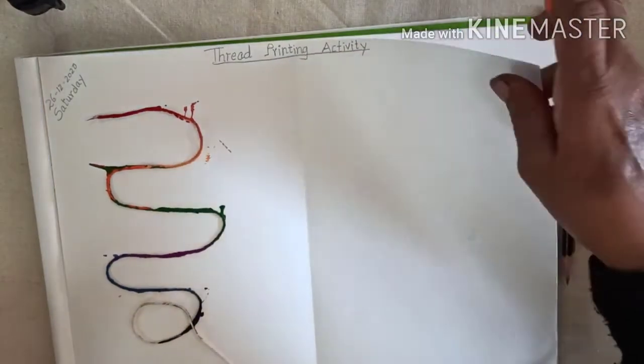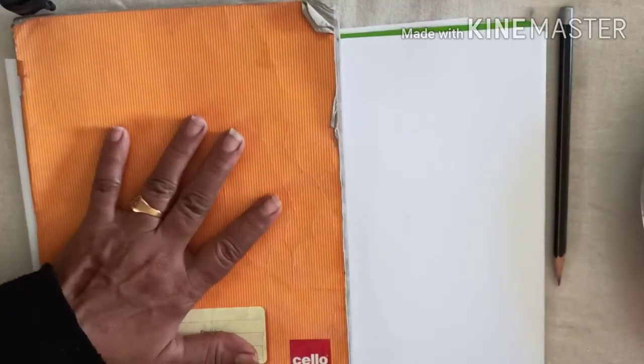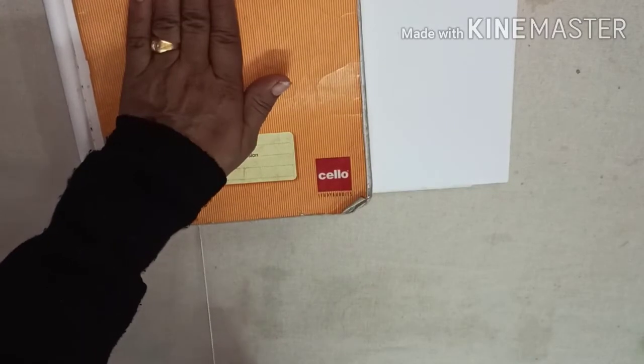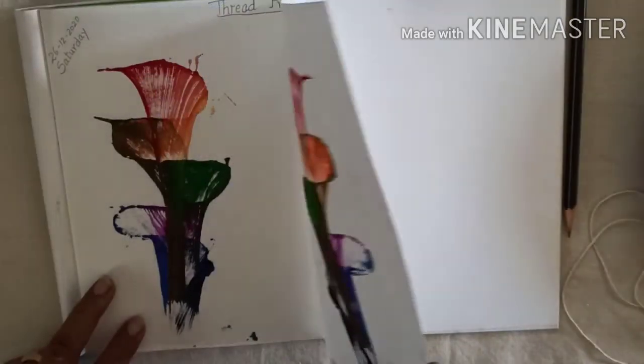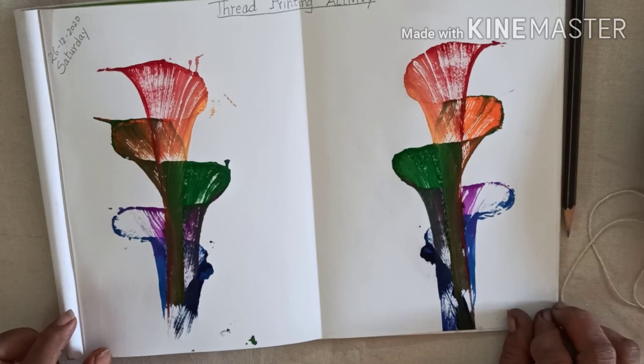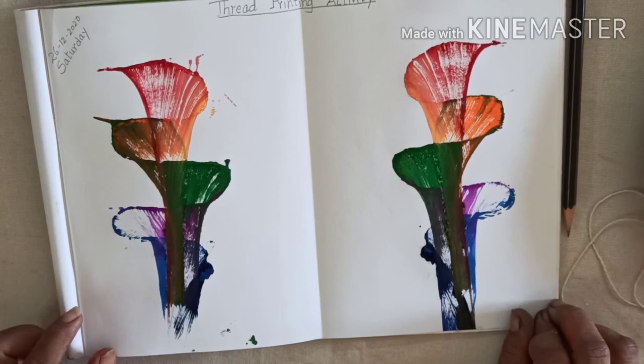Now hold this page. After that take this notebook, keep aside and open the page and see what it is prepared. Okay, can you see this? How beautiful it looks. Okay, then you have to do this activity in your sketchbook this way only. Okay, thank you.